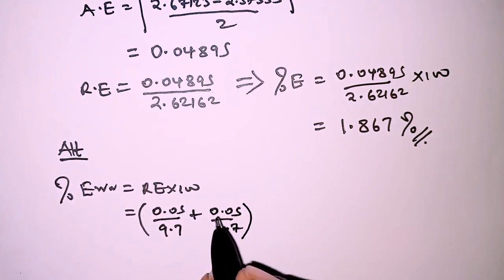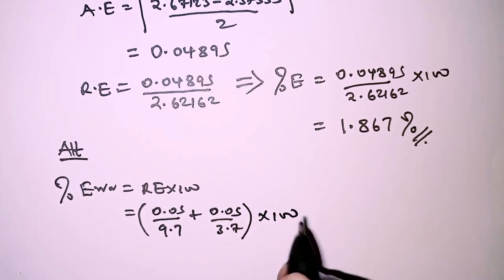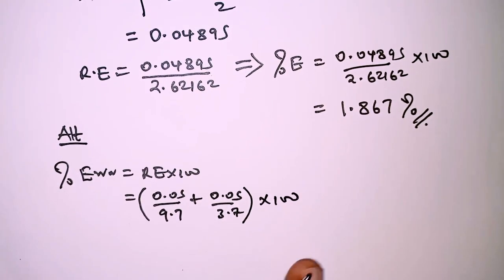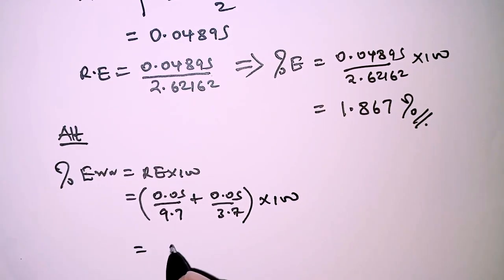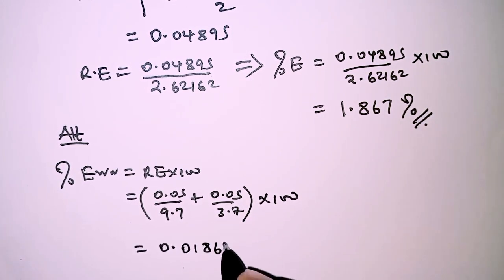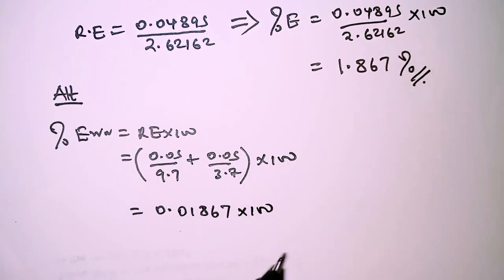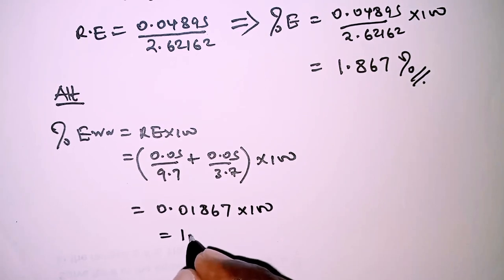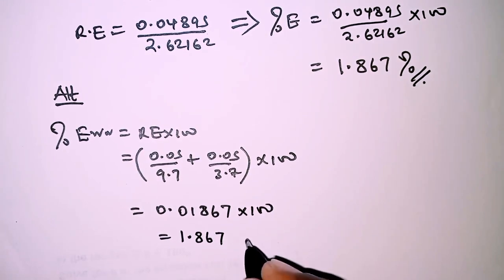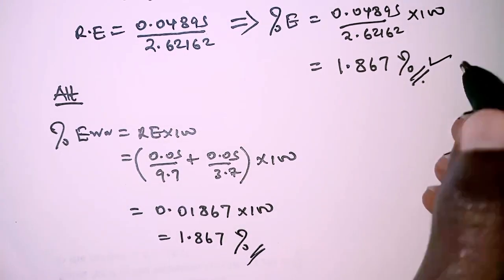This gives us the relative error, which we then multiply by 100. When worked out, we get 0.01867, and then times 100 gives us 1.867 percent, just like we got earlier.